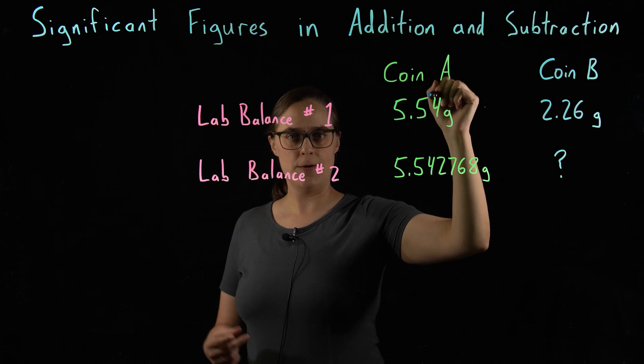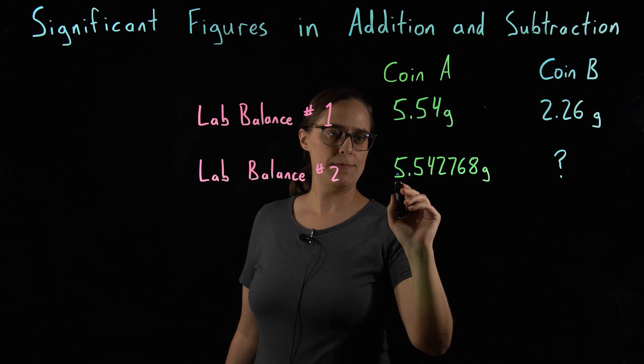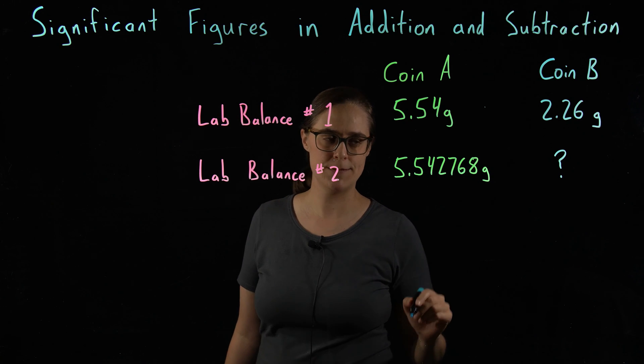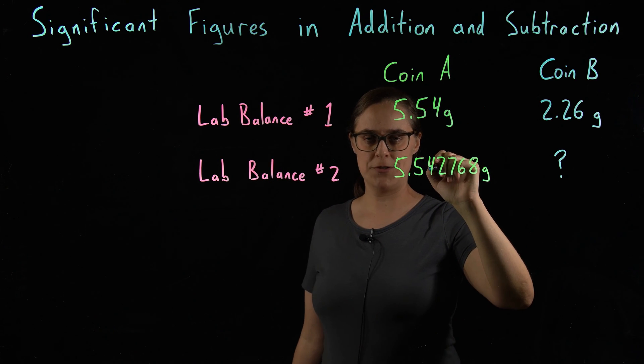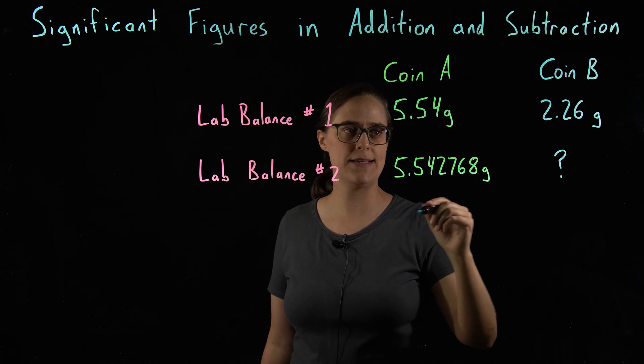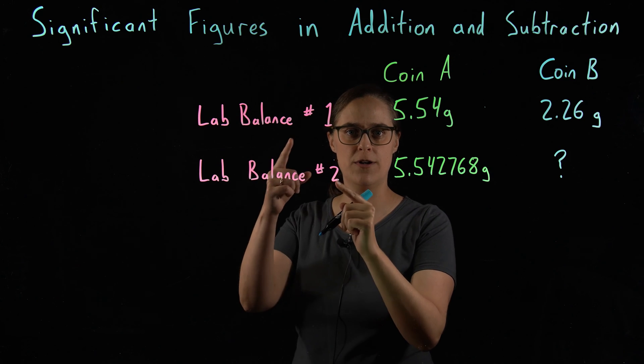And we measured the mass of coin A again, this time on lab balance 2. And we got a mass of 5.542768 grams. This is the same coin being measured both times. This coin has the same mass both days. The difference is precision of our instrument.